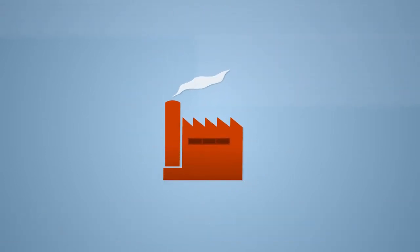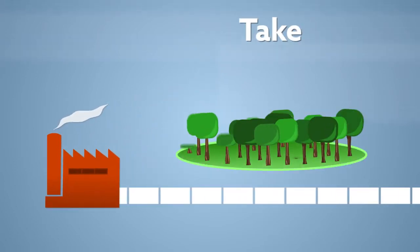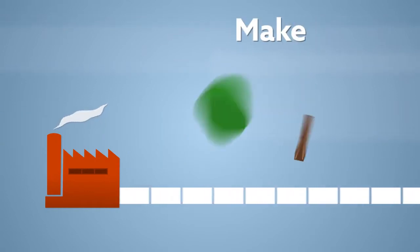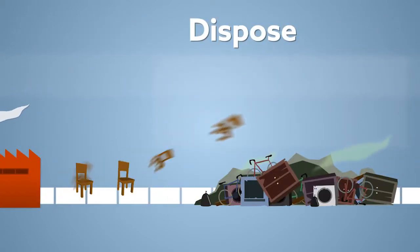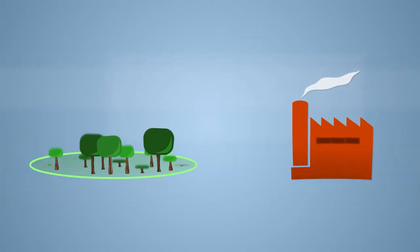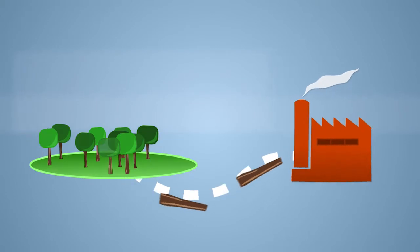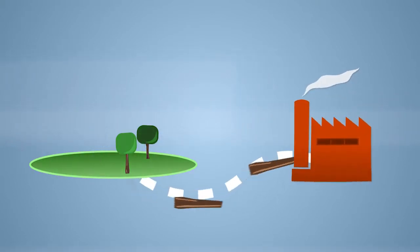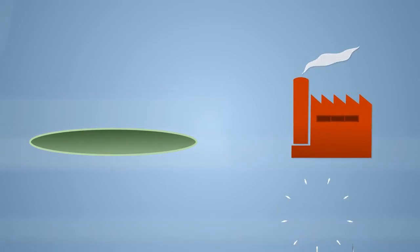Most industrial companies follow linear production processes which take, make and dispose. Such processes add to the growing scarcity and depletion of our natural resources and in the long run are unsustainable for the environment, as well as for industry.